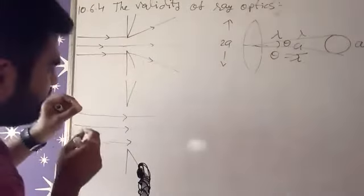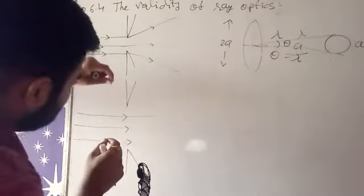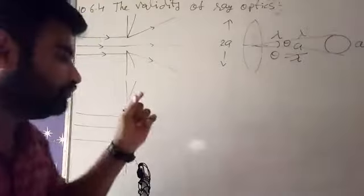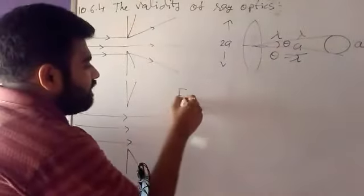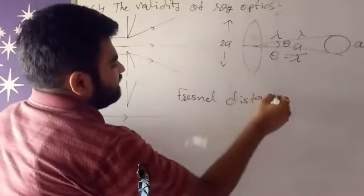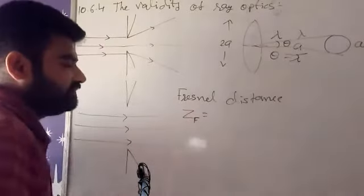This arc 'a' is the diameter of our image and lambda is the radius. Yes, where do I go? This is Fresnel distance, which I am going to derive here. Zf is equal to, yes.